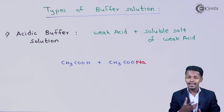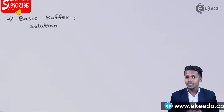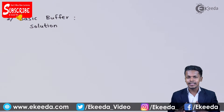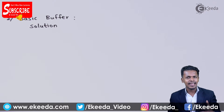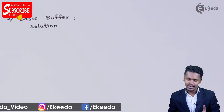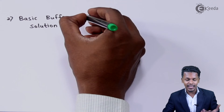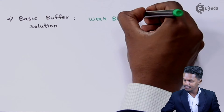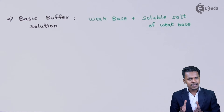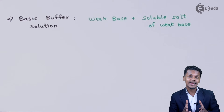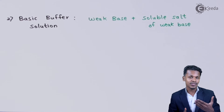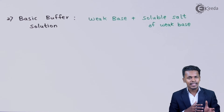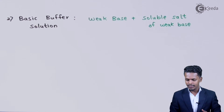Now let us talk about the next type: the basic buffer solution. Similar to the acidic buffer solution, where we took a weak acid along with a soluble salt of the weak acid — in this case we take a weak base along with a soluble salt of that weak base, and in equal proportions. Let me discuss an example to make it easier to understand, and the mechanism of how it resists pH change will be discussed in the next topic.